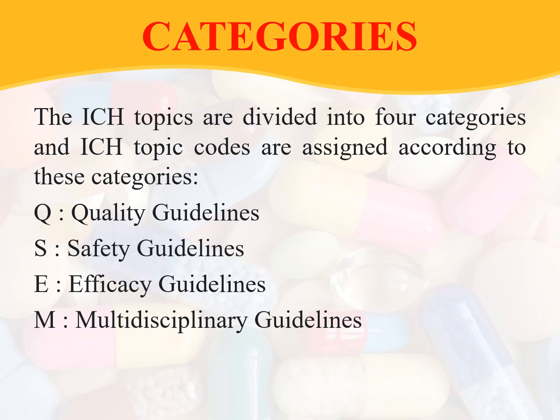There are broadly four categories in the ICH guidelines. The ICH topics are divided into four categories and topic codes are assigned accordingly — QSEM. Q stands for quality guidelines, S stands for safety guidelines, E stands for efficacy guidelines, and M stands for multidisciplinary guidelines.